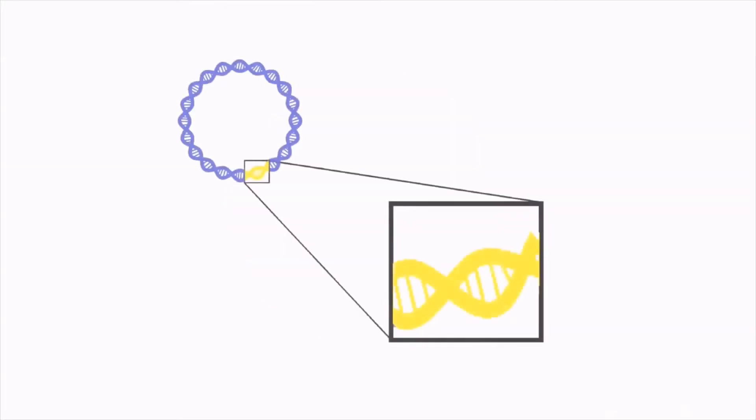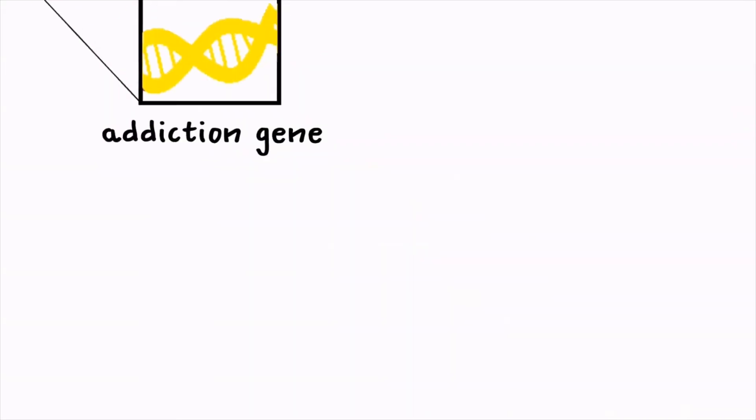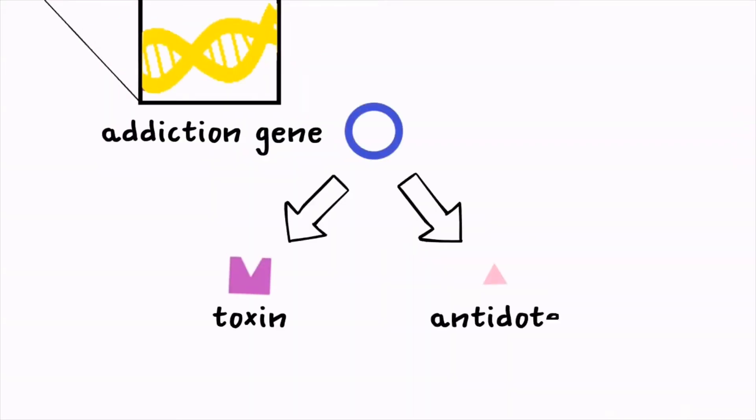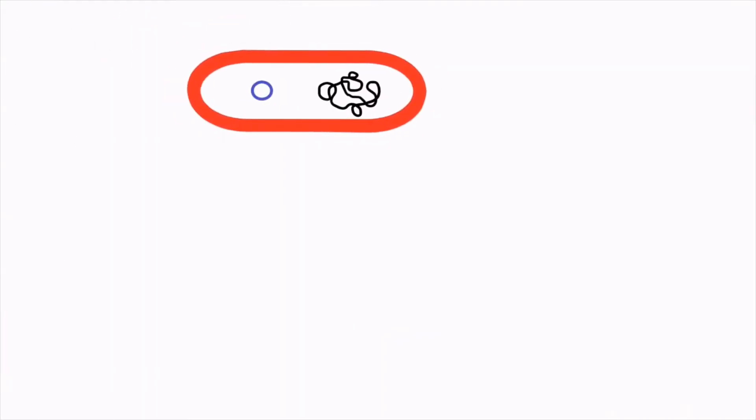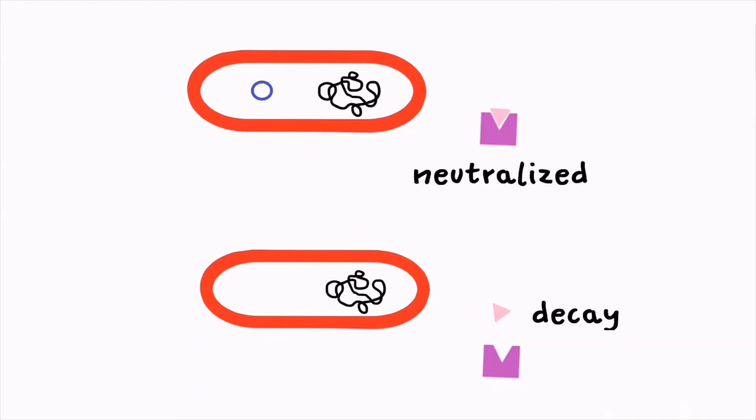Many plasmids also carry addiction genes, which make a stable toxin and an unstable antidote. When the bacteria possess this plasmid, the toxin is neutralized by the antidote. However, when the plasmid is lost, the antidote decays and the toxin kills the bacteria.